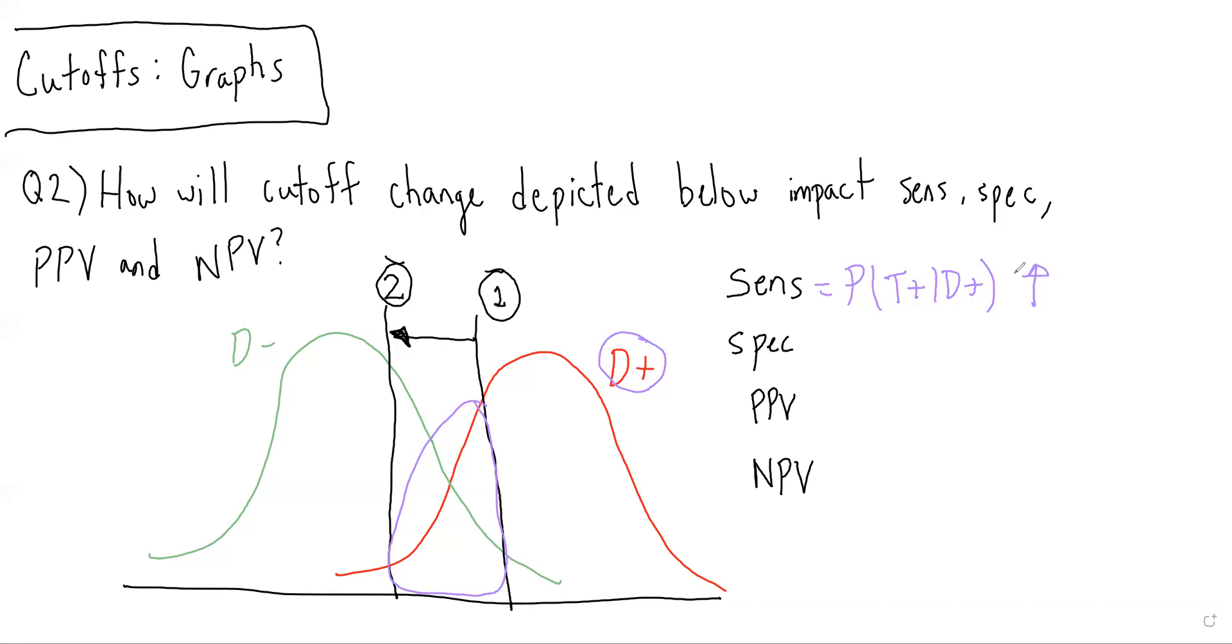We remember that sensitivity and NPV track with one another, so if sensitivity is going up, NPV must also be going up.